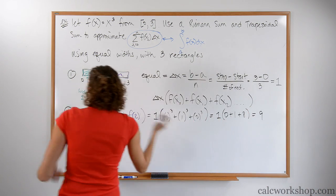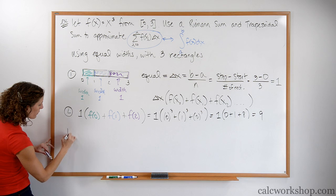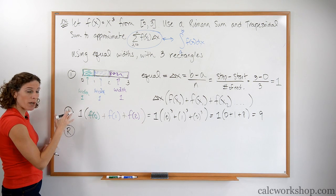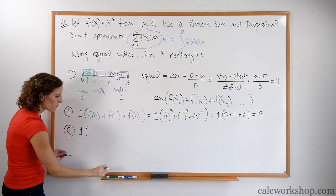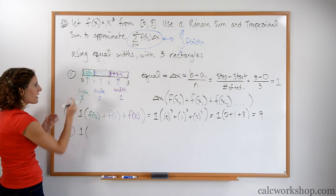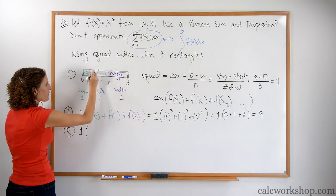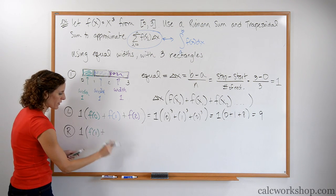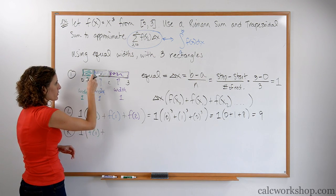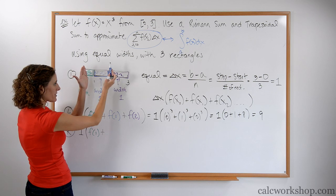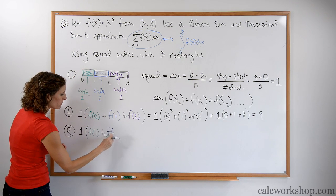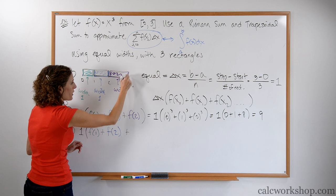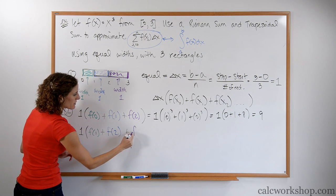Let's look at the right-hand Riemann sum. Again, we factor out the width of 1. We look at the height on the right-hand side of each rectangle: f of 1 for the green, f of 2 for the blue, and f of 3 for the purple.